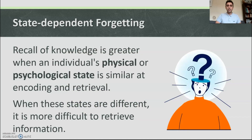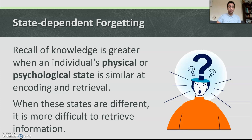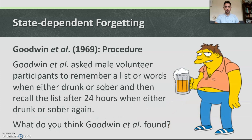State dependent forgetting: recall of knowledge is greater when an individual's physical or psychological state is similar at encoding and retrieval. When these states are different, it is more difficult to retrieve information. For example, if you're happy when you learn a piece of information, you're more likely to recall it when you're feeling happy.